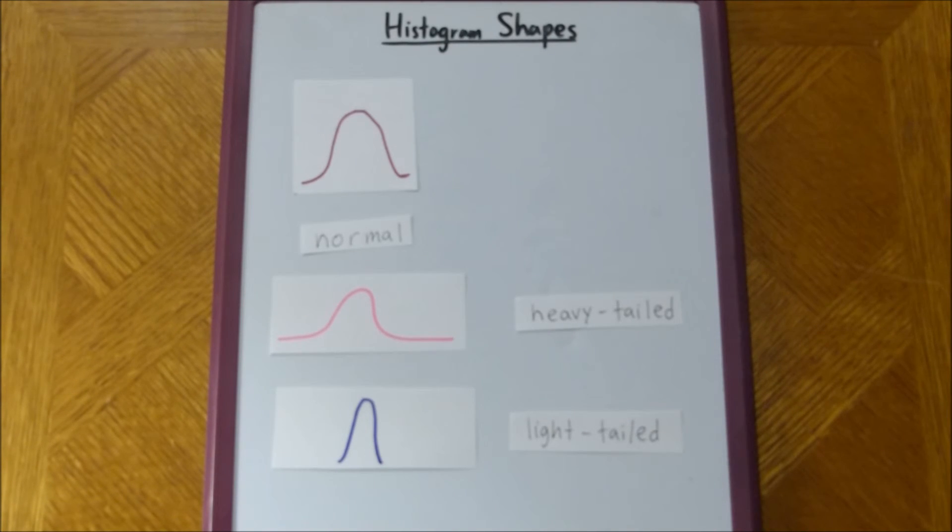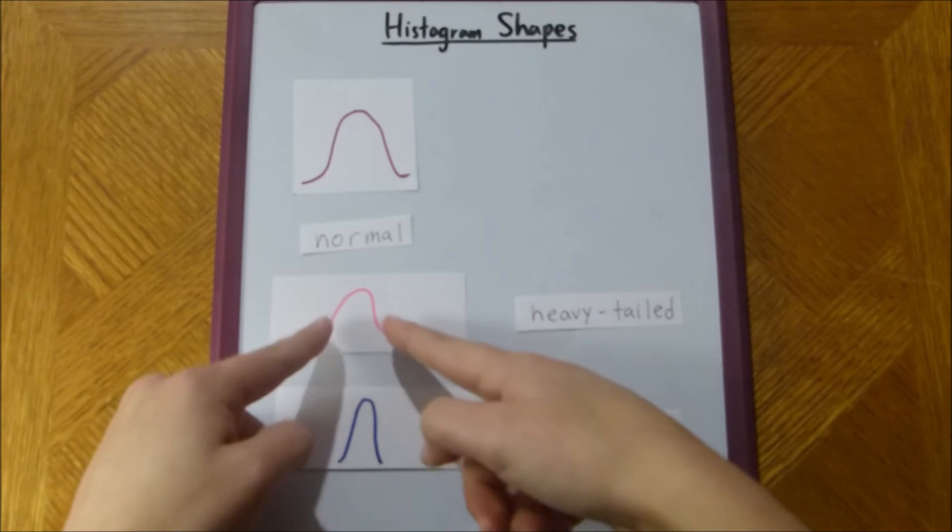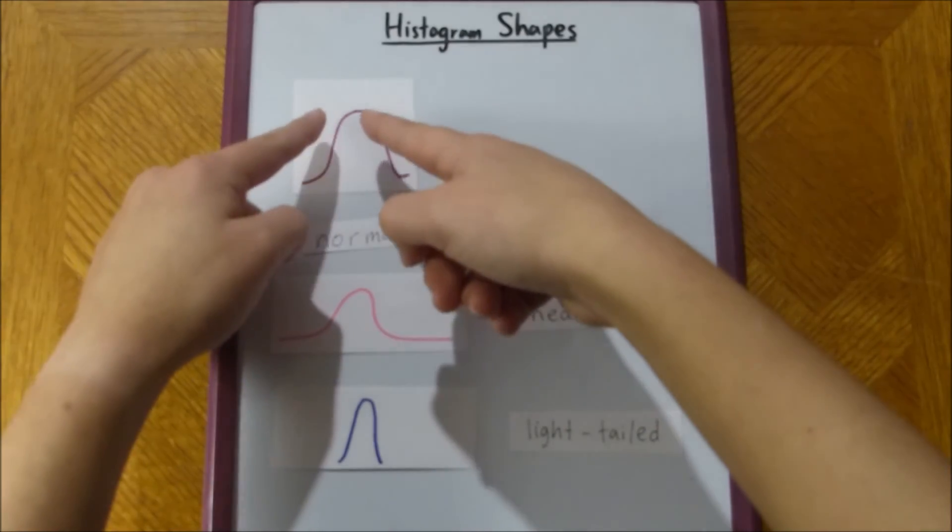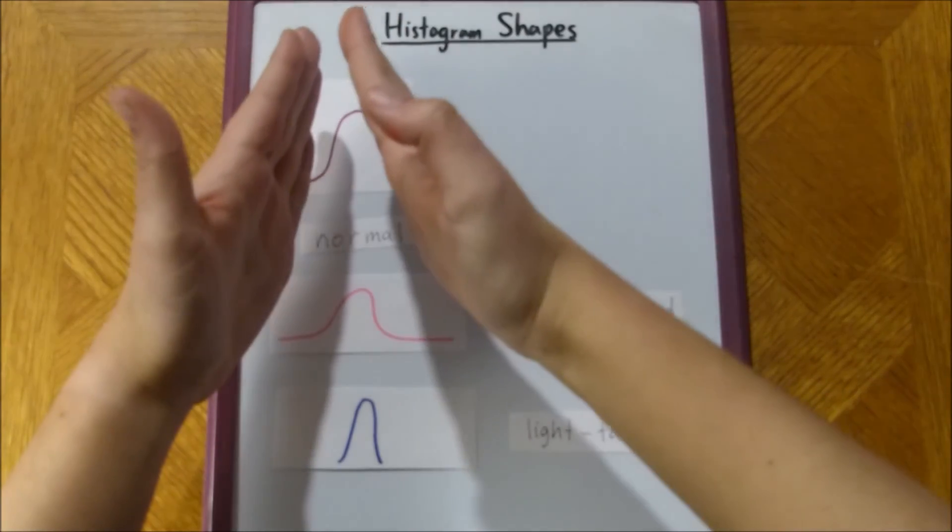There's a lot less. We would also say that a heavy-tailed distribution is a curve with tails that do not decline as rapidly as the tails of a normal curve, right? It's very gradual. Versus here, where the slope is a lot steeper.